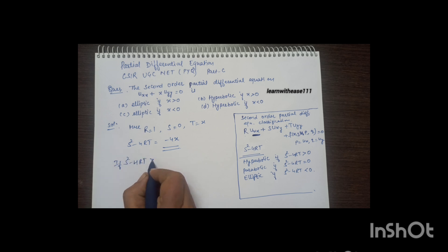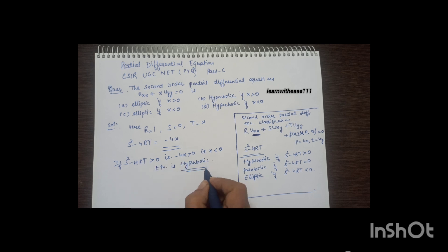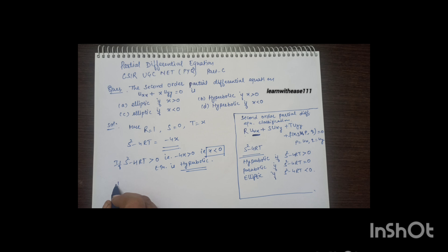So s²-4rt = -4x. For the equation to be hyperbolic, -4x must be positive, meaning x needs to be negative.